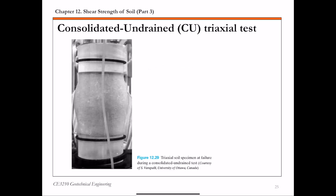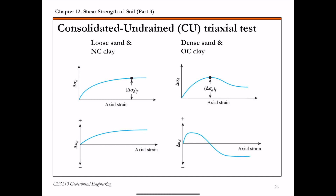This picture shows a specimen sheared to failure under the consolidated undrained triaxial test. The next slide shows typical patterns of the evolution of deviator stress delta sigma d and excess pore water pressure delta Ud as you shear the specimen. On the left-hand side, these figures are for loose sand and normally consolidated (NC) clay. For this type of soil, as you increase the axial strain, both the deviator stress delta sigma d and the excess pore water pressure delta Ud increase.